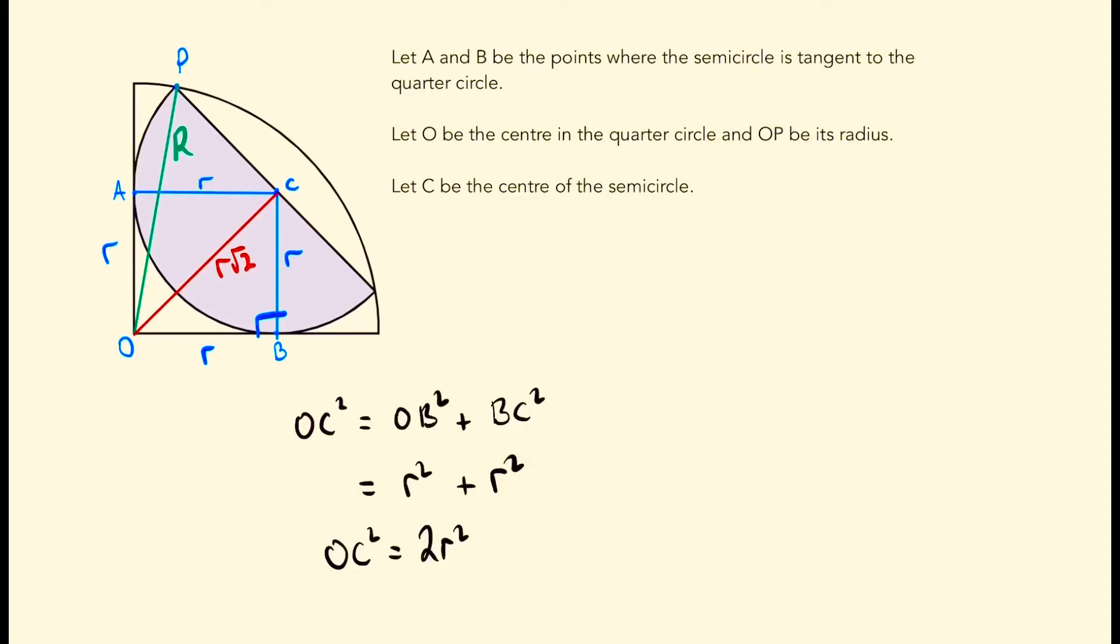And now we can recognise the second right angle triangle at OCP. So we form another 90 degree angle here. And applying Pythagoras' theorem once more, because we know that P to C is equal to R, that means we can figure out that the radius of the quarter circle, R squared, is the same as doing R root 2 all squared plus R squared. Or this becomes 2R squared plus R squared, which is 3R squared.